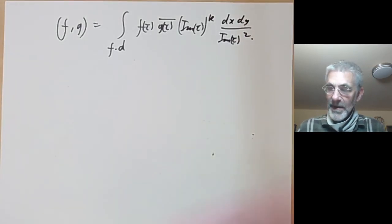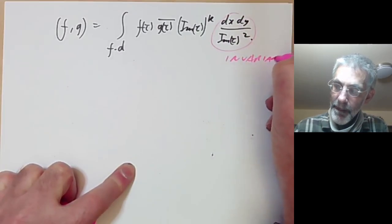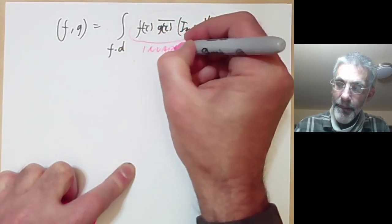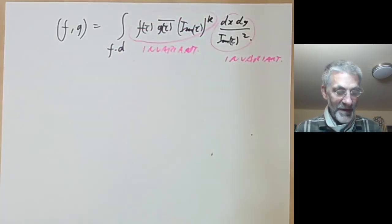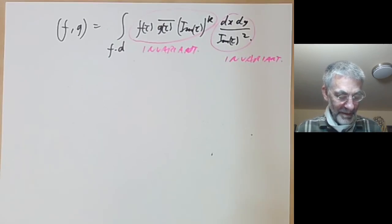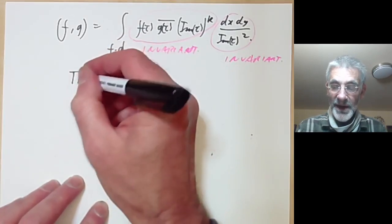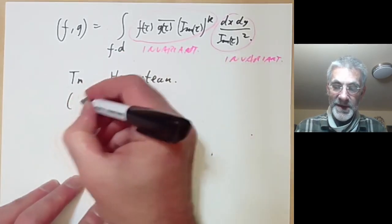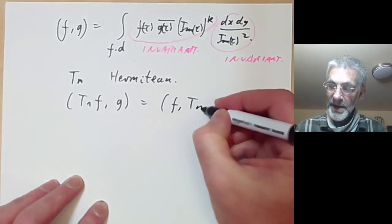The factor (Im τ)^k is invariant, and the measure dx dy over (Im τ)² is also invariant, so it makes sense to integrate this over a fundamental domain. One can then check that the Hecke operators T_n are Hermitian: the inner product ⟨T_n f, g⟩ equals ⟨f, T_n g⟩.